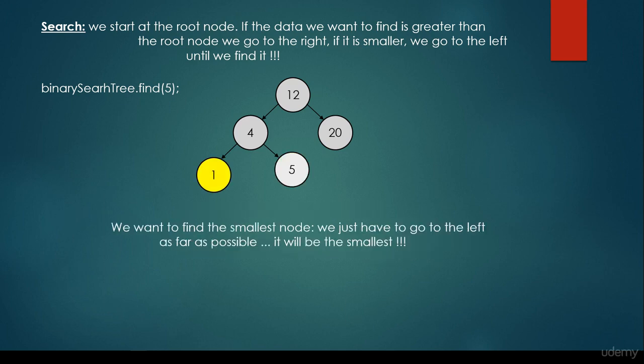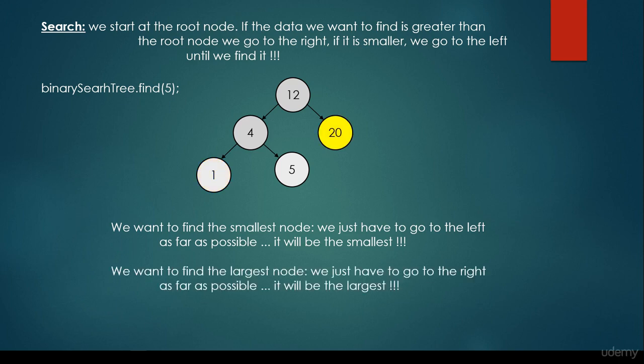What if we would like to find the smallest node? We just have to go to the left as far as possible, and it will be the smallest item, because this is how binary search trees are defined. The left subtree is smaller than the root node. The right subtree is greater than the root node. So if we go to the left as far as possible, it's going to be the smallest item. What if we would like to find the largest node? We just have to go to the right as far as possible, and it will be the largest.